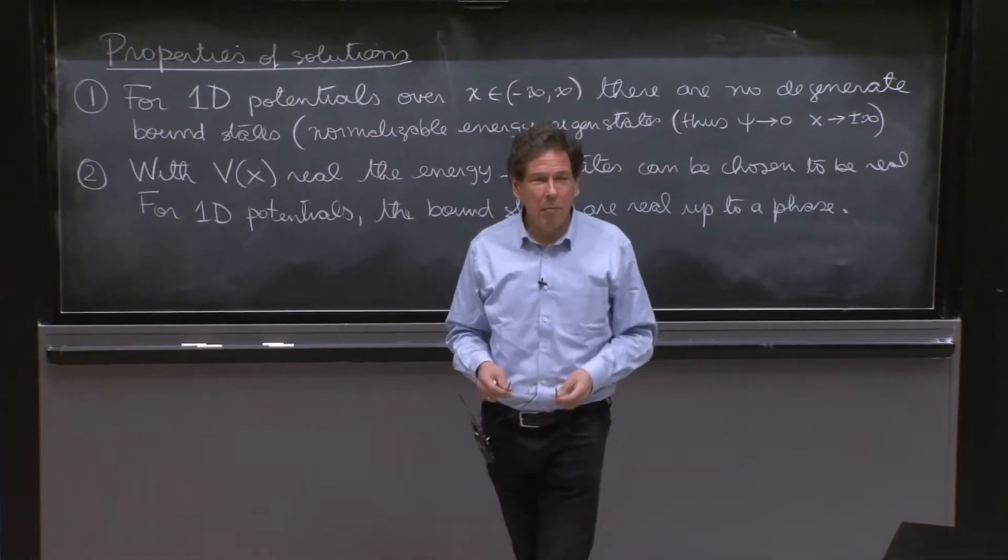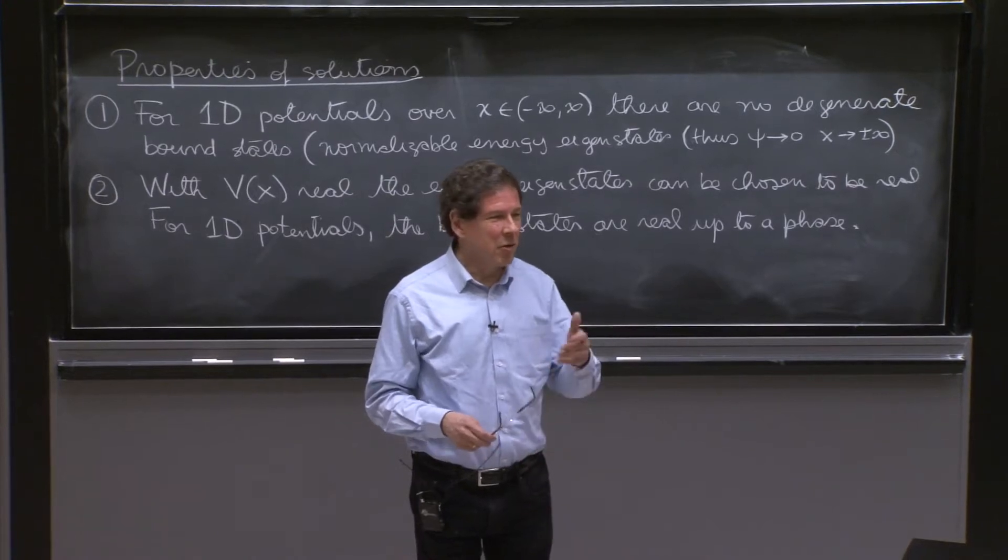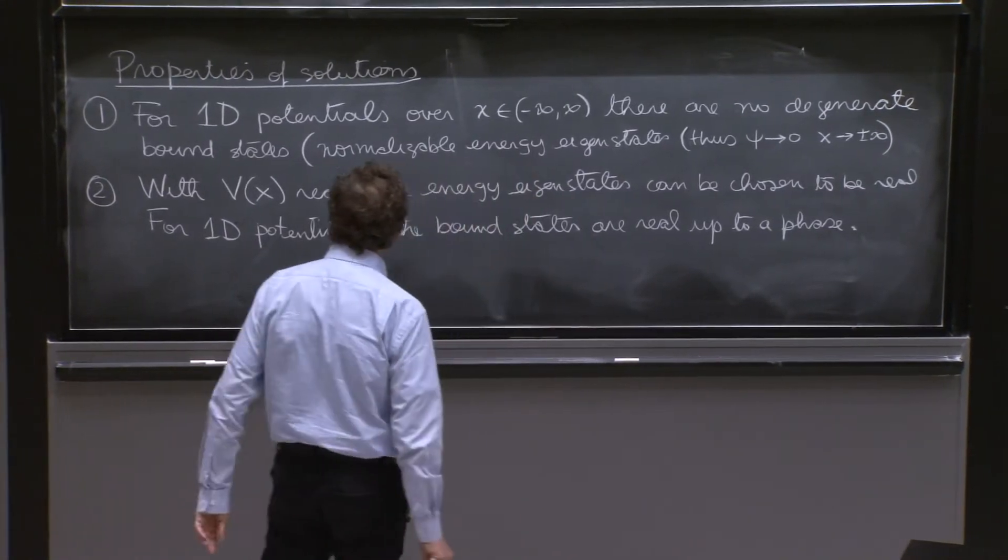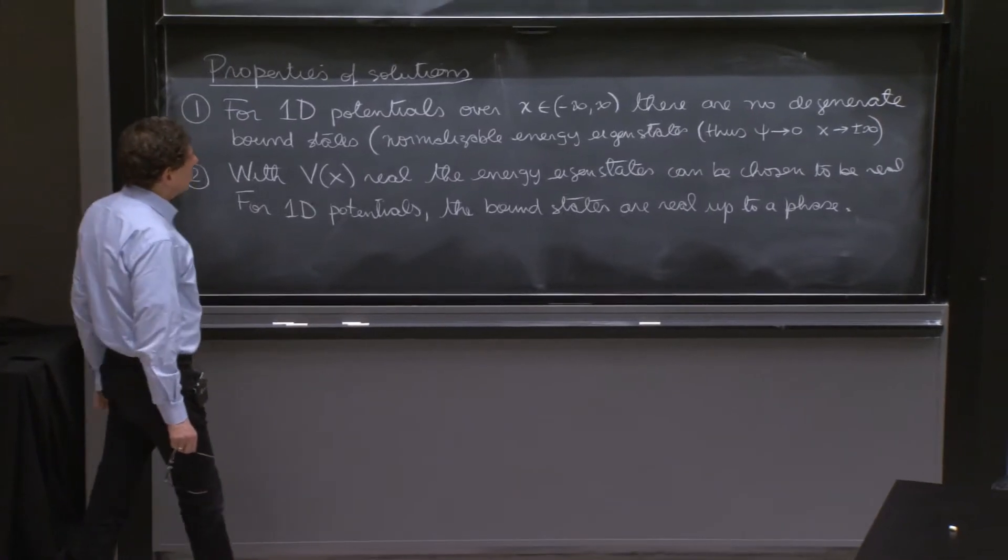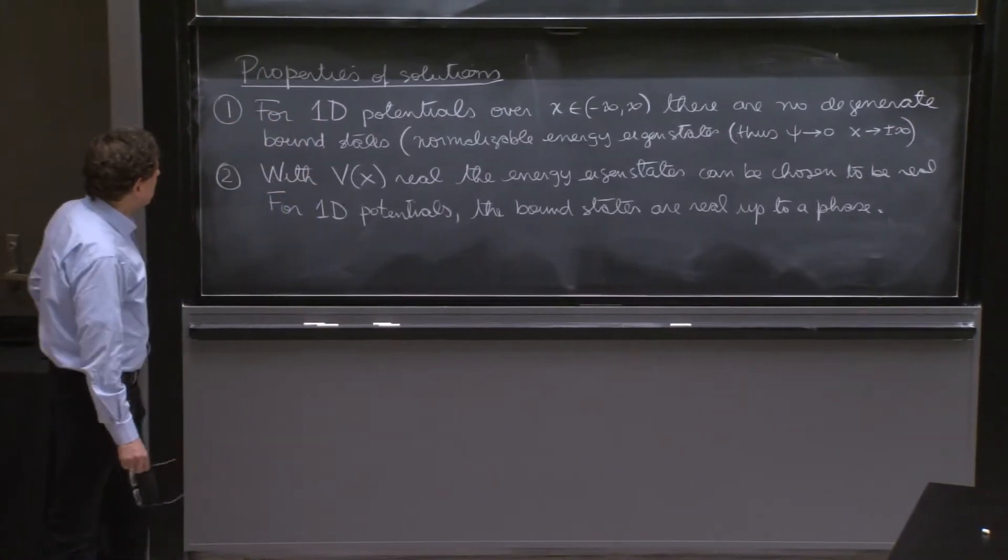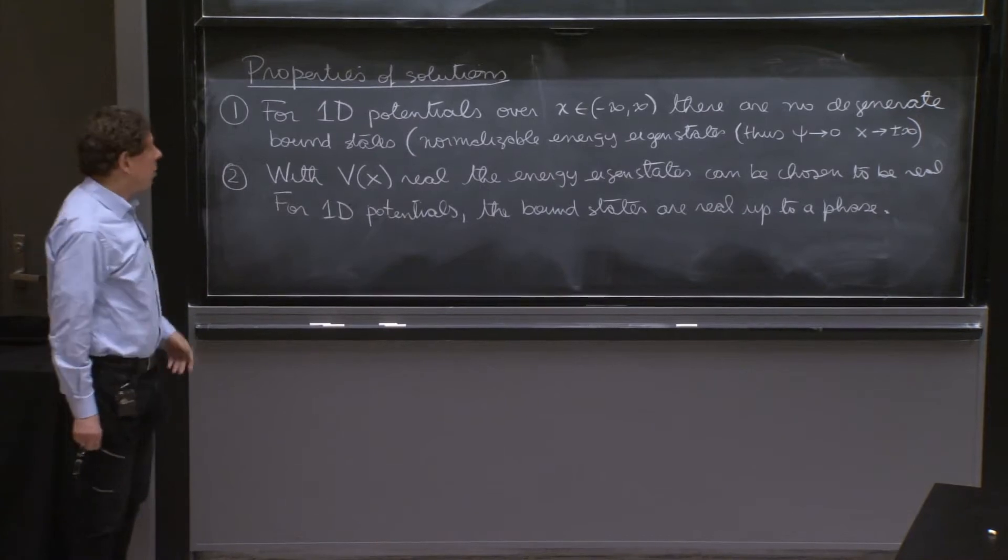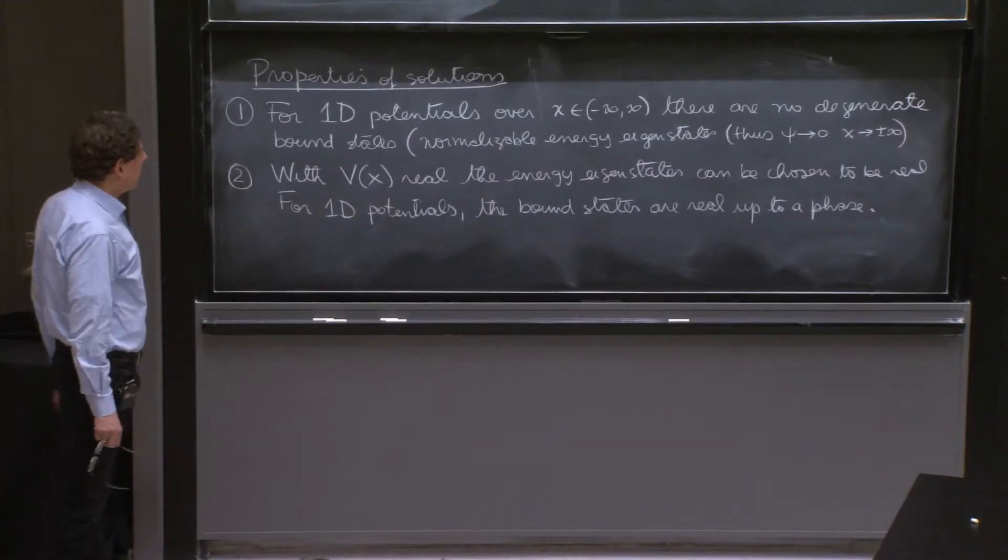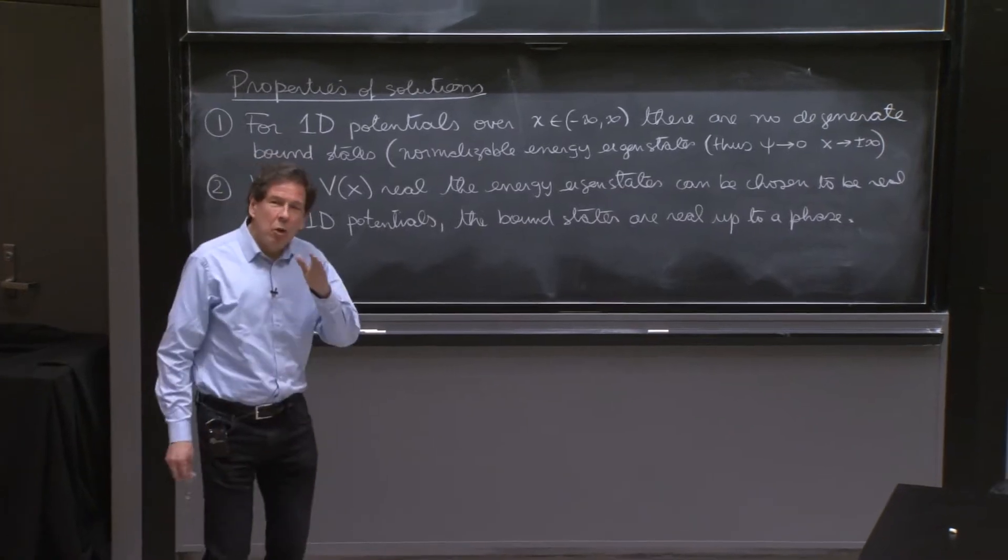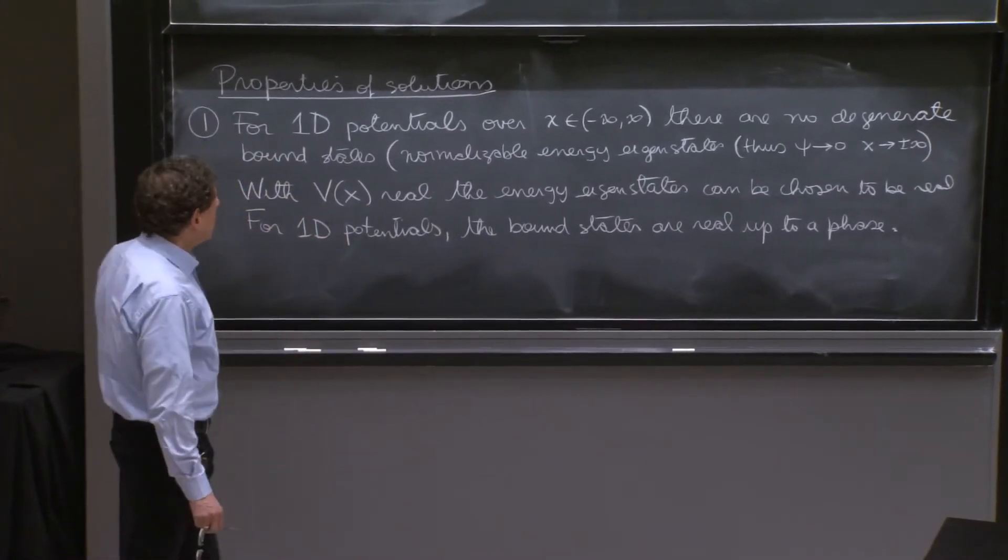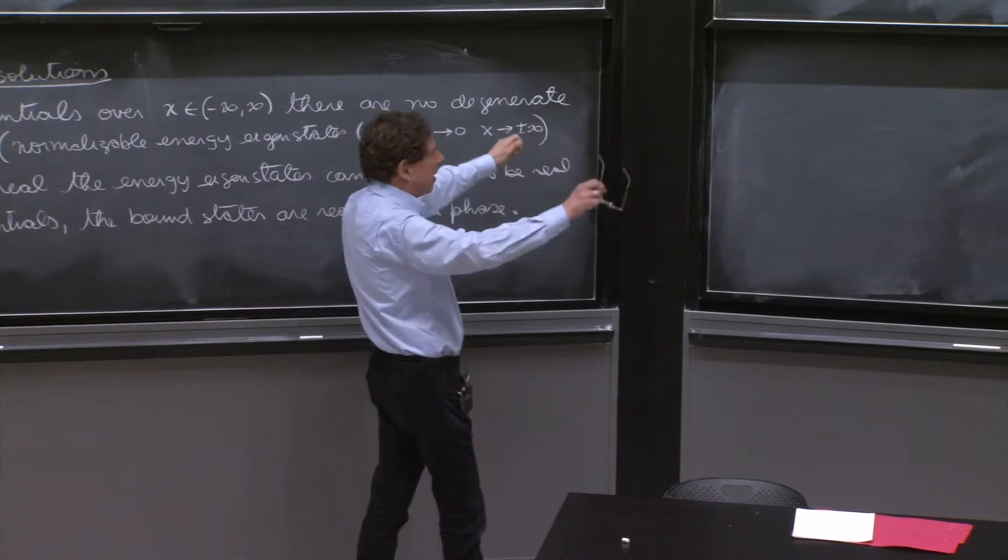If you find out those are not true, you will learn something about your intuition and see what was wrong with it. So we're talking about one-dimensional potentials, time-independent potentials. A first statement that is very important, and you will prove in an exercise after spring break, is that for one-dimensional potentials, when you look at what are called bound states, you never find degeneracies, energy degeneracies. This is when x extends from minus infinity to infinity.